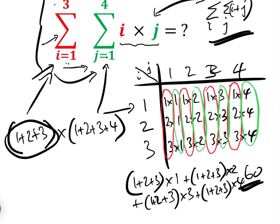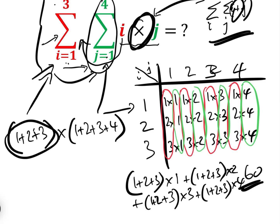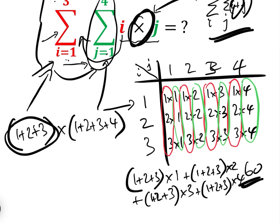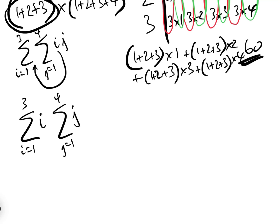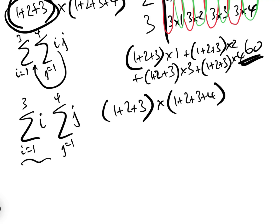This is very interesting because 1+2+3 is the sum over i and 1+2+3+4 is the sum over j. Because we are multiplying — it doesn't work when we're adding — we can take i out of the inner sum. The inner sum only sums j from 1 to 4, so we can rewrite it as the sum from i=1 to 3 of i, times the sum from j=1 to 4 of j. That's 6 times 10 which equals 60 — the same answer, but far easier to calculate.